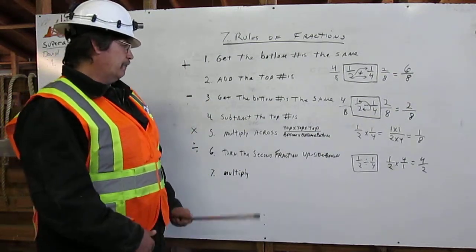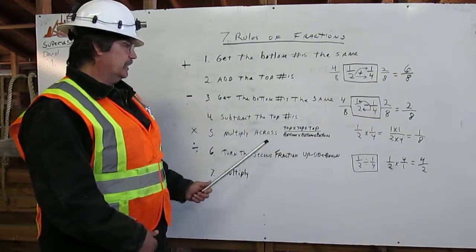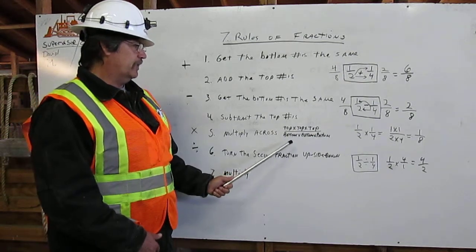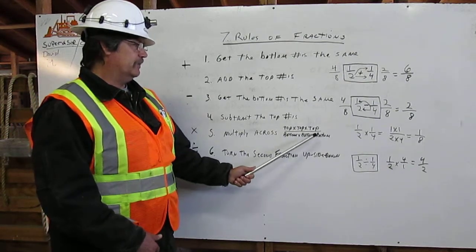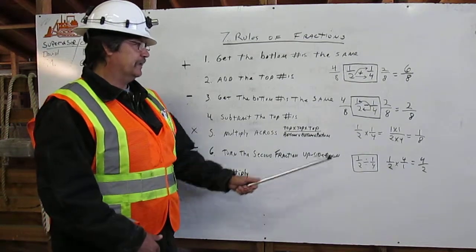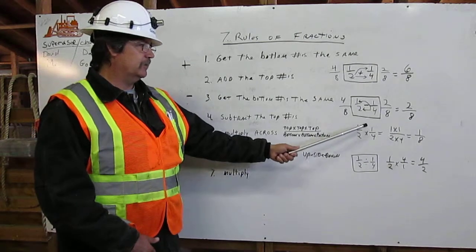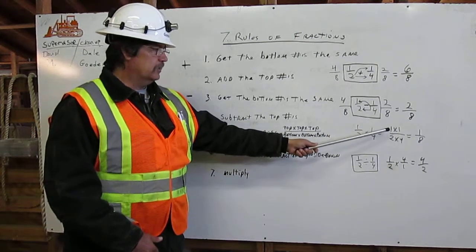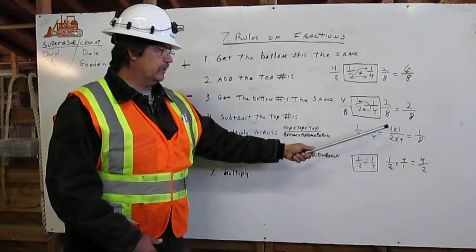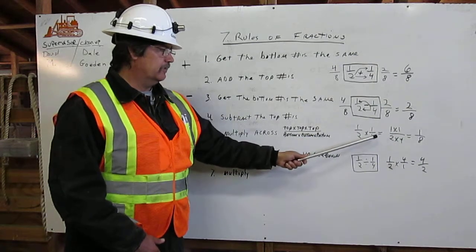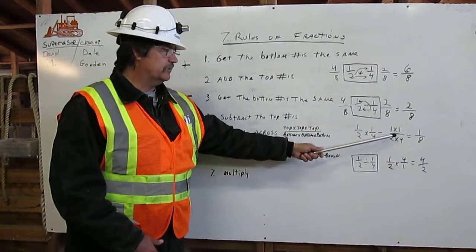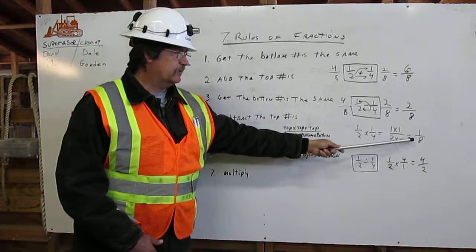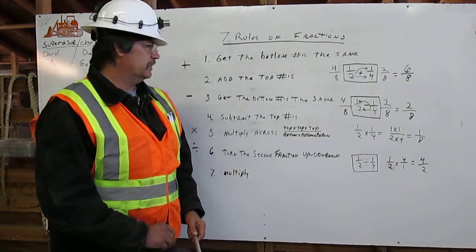For multiplication, you just multiply across — the top times the top times the top, over the bottom times the bottom times the bottom. In our example, one-half times one-quarter: you multiply the top, one times one, over the bottom, two times four. One times one is one, two times four is eight, and you get one-eighth.